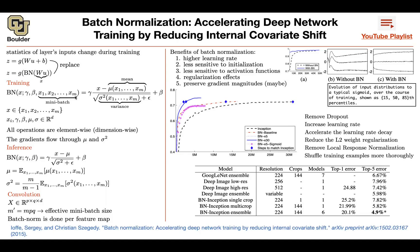The inference section of batch normalization refers to using the mu and sigma from training to perform batch normalization on validation and test observations. Yes — the mu and sigma that you have during inference, you're going to use on your validation data, your test data, and when you put your model into production.